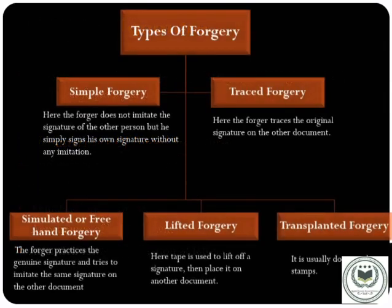Types of forgery: forgeries are categorized into five types. First, simple forgery, in which the forger does not imitate another person's signature but simply signs their own name without imitation. Second, traced forgery, where the forger traces the original signature onto another document. Third, simulated or freehand forgery, where the forger practices the genuine signature and tries to imitate it on another document. Fourth, lifted forgery, where tape is used to lift a signature and place it on another document. Fifth, transplanted forgery, which is usually done on stamps.